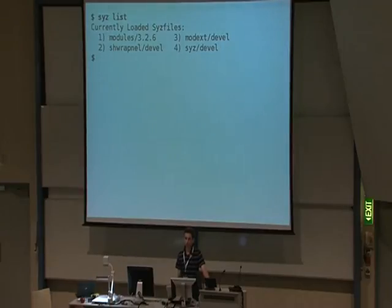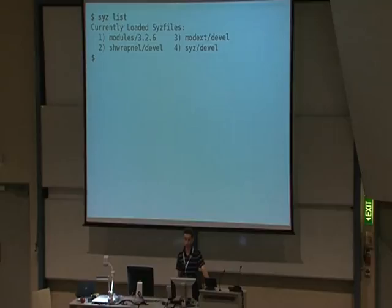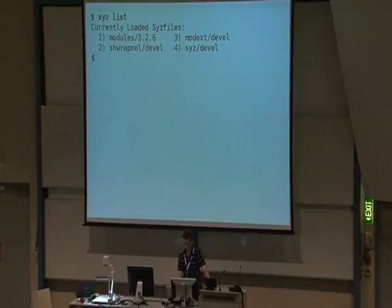This is an example of how you use the sys utility, which is the main part of SISX. You can ask it what sys files are loaded, and you can see here there are four of them. For the modules piece of software it's a specific version, 3.2.6, but the other pieces of software are version 'devel', which basically means they're Git clones, which makes doing development work a little bit easier.